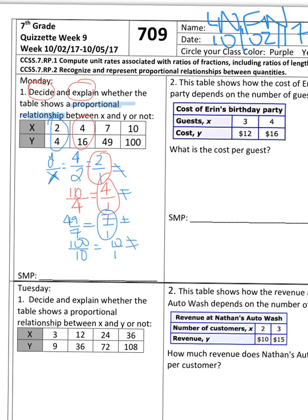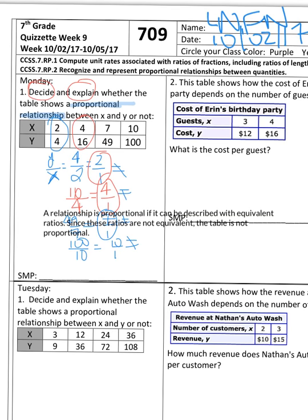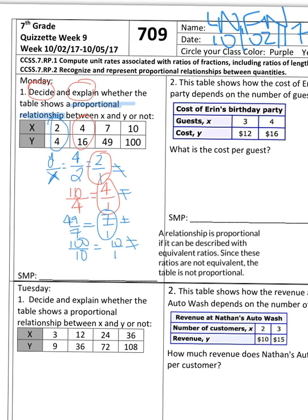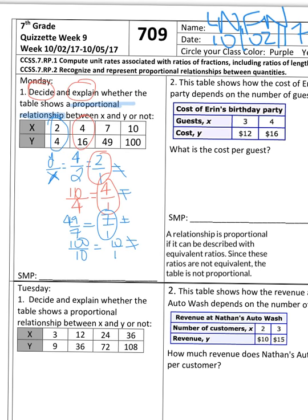Now you're going to write in a sentence what I just explained. So I went ahead and typed it up for you. You might want to pause this and put it somewhere where you can actually read it. I'm going to put it right here, but this is for number 1. It says, A relationship is proportional if it can be described with equivalent ratios.